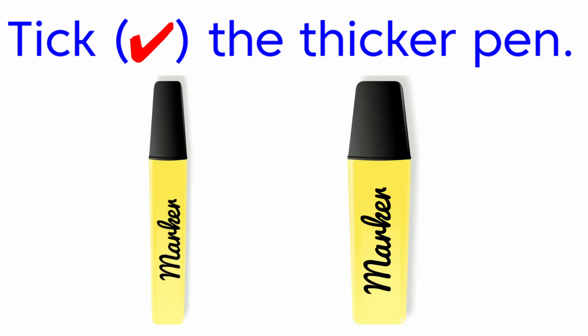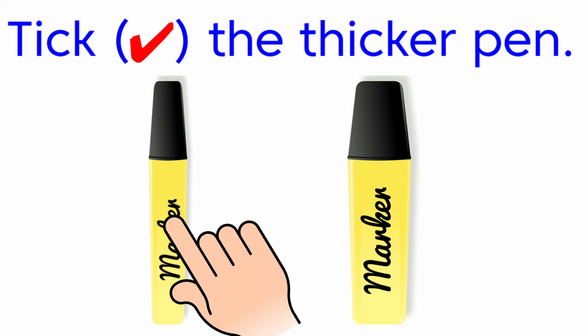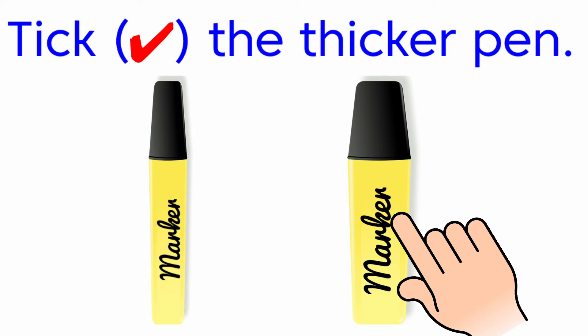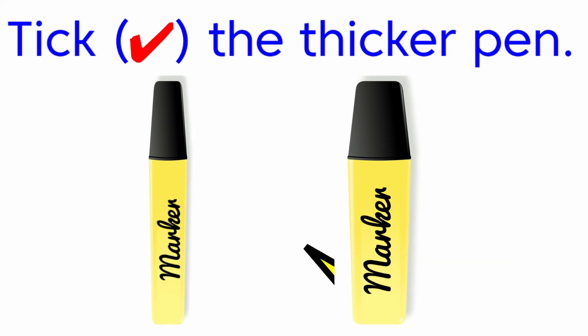Next one, tick the thicker one. Here they have given two pins. Among these 2, the first one is thin and the second one is thick. So we are going to put a tick for the second one, because it is thick.